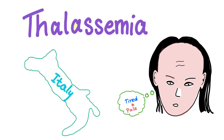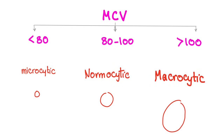Symptoms of anemia: tired and pale. Depending on the MCV, or the mean corpuscular volume, we can classify anemia into microcytic, normocytic, or macrocytic. Usually thalassemia will be microcytic, meaning the MCV is less than 80.